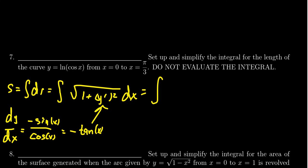So plugging that in, we're going to get the square root of one plus negative tangent quantity squared dx. I also want to consider the bounds, but these were explicitly given to me, 0 to pi thirds, like so.